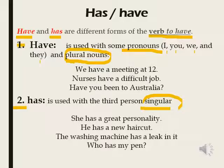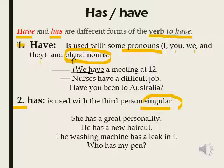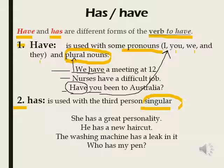Look at the examples for have. 'We have a meeting at 12.' I wrote have because of 'we' — كتبنا have لأنو عدنا we — which is plural. 'Nurses have a difficult job.' Nurses — الممرضات — plural. 'Have you been to Australia?' استخدمت have مع 'you'، وهو من ضمن الضمائر اللي تستخدم معها have.